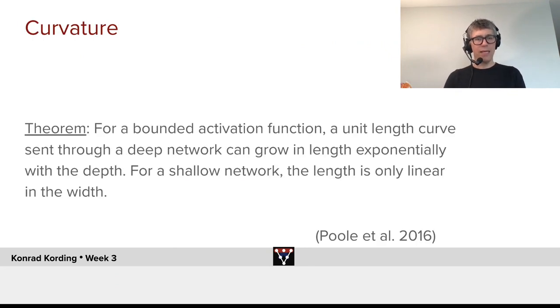And here's another one. For a bounded activation function, a unit length curve sent through a deep network can grow in length exponentially with the depth. For a shallow network, the length is only linear in the width. So all these findings point to the advantages that we can sometimes have in expressivity by having deep neural networks.